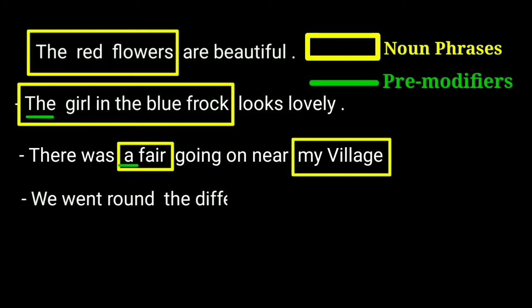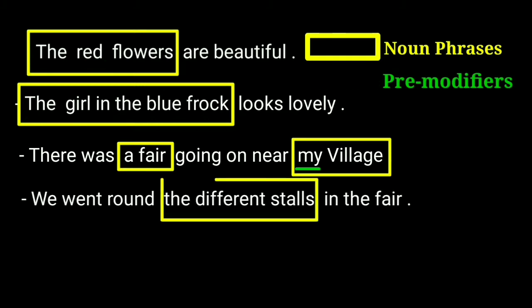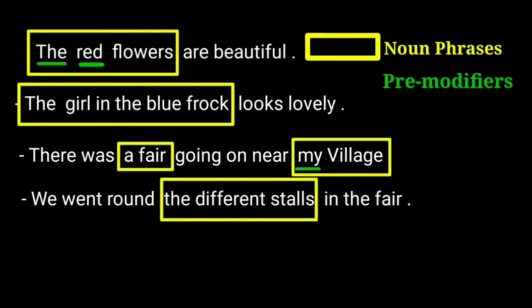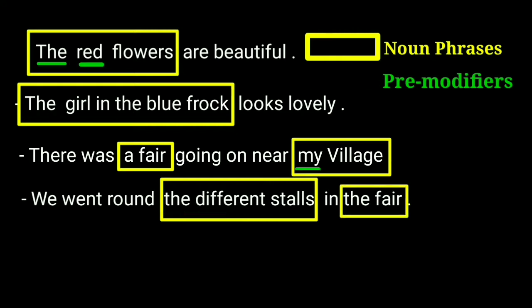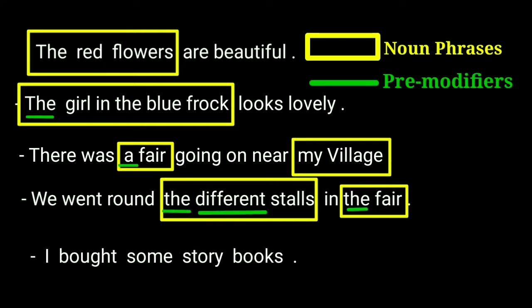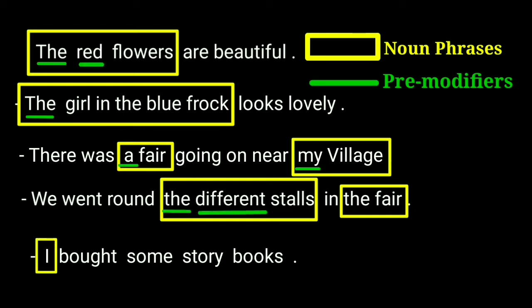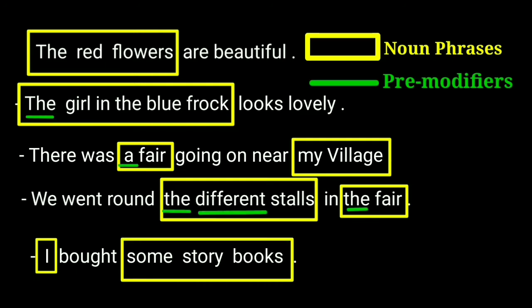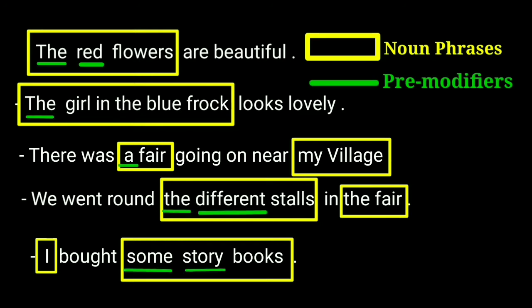We went round the different stalls in the fair. 'The different stalls' is a noun phrase with head noun 'stalls'. It has two pre-modifiers: 'the' (article) and 'different' (adjective). 'The fair' is another noun phrase with 'the' as article. I bought some story books. The pronoun 'I' is a noun phrase. 'Some story books' is another noun phrase with head noun 'books'. 'Some' and 'story' are two pre-modifiers.